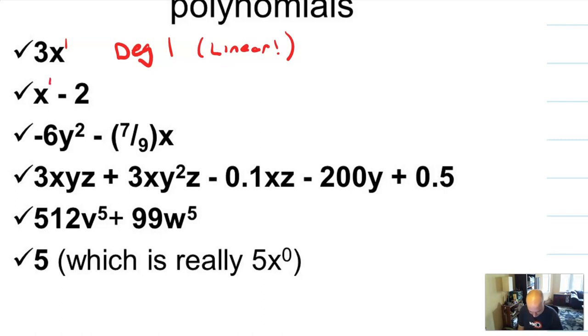x minus 2 is x to the first minus 2. This is also degree 1. So you don't add the degrees or the exponents between terms. 6y squared minus 7 ninths x. 2 is the highest exponent. So that's a degree 2.